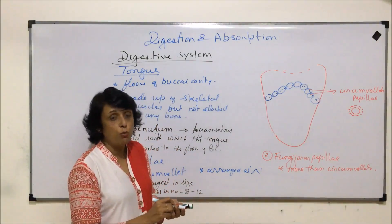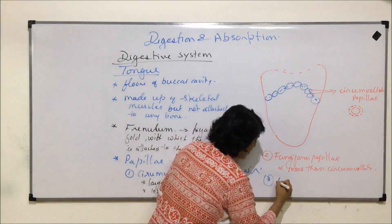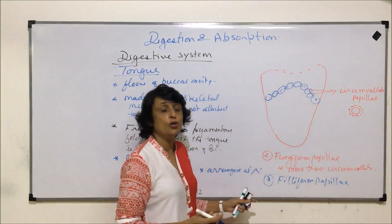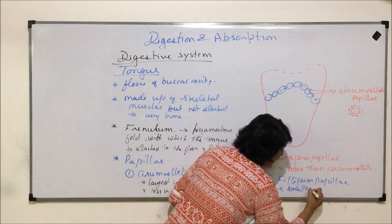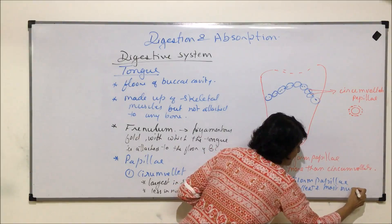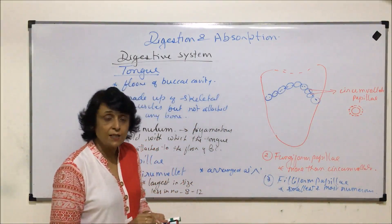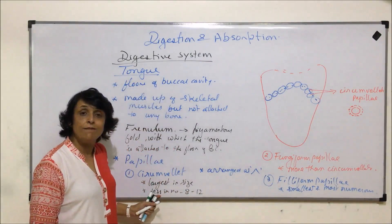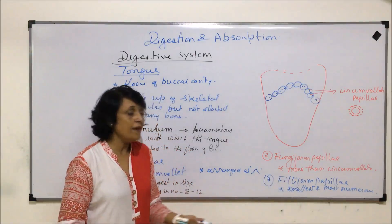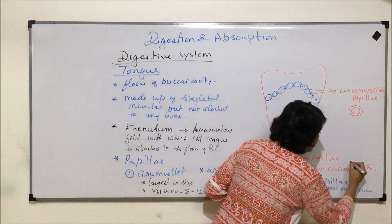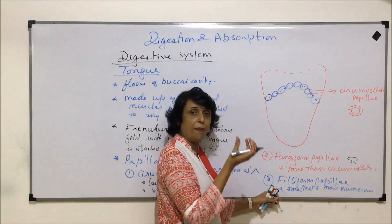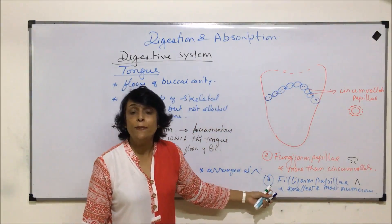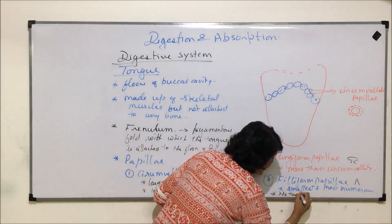The maximum ones are the last type, which are also the smallest. The third type is known as filiform papillae. Filiform papillae are most numerous — their number is maximum and their size is smallest. Largest are circumvallate, smallest are filiform, and least in number are circumvallate while maximum in number are filiform. Filiform papillae are conical and without taste buds.